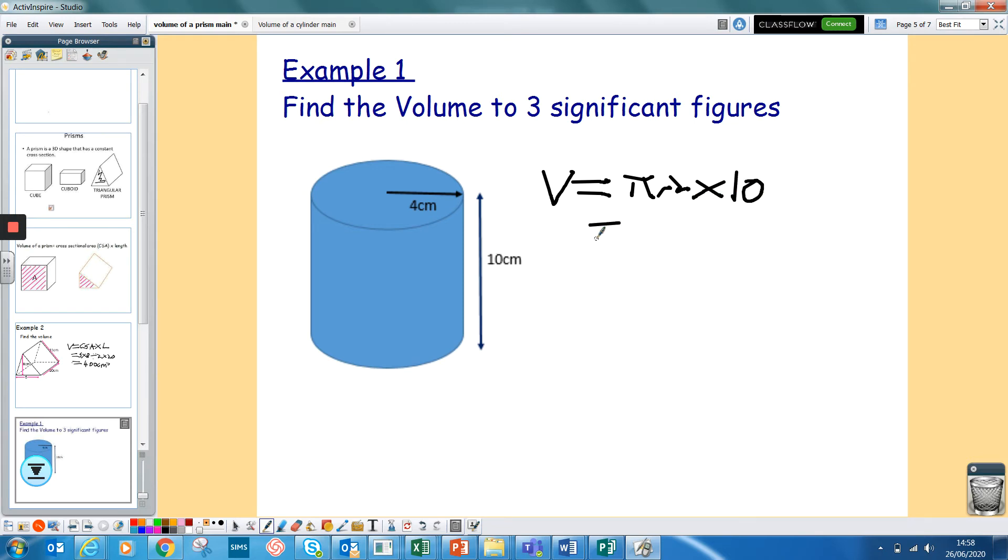So put that in. Pi times my radius. Remember, radius is from your center to the edge, which is 4. So pi times 4 squared times by 10. And then just put that into your calculator. You should get 502.